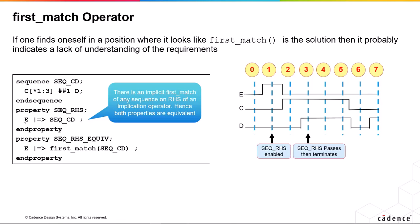So if I say E implies, from the next cycle, I observe the sequence CD — what I will see is, if E occurs, then C must occur between one and two times. So C occurs once and then D occurs. That property passes at cycle three. We don't hang around and wait to see if we get two C's or three C's followed by D. The property has passed; we have a conclusive result. The behavior we described has been observed, therefore the property has passed.